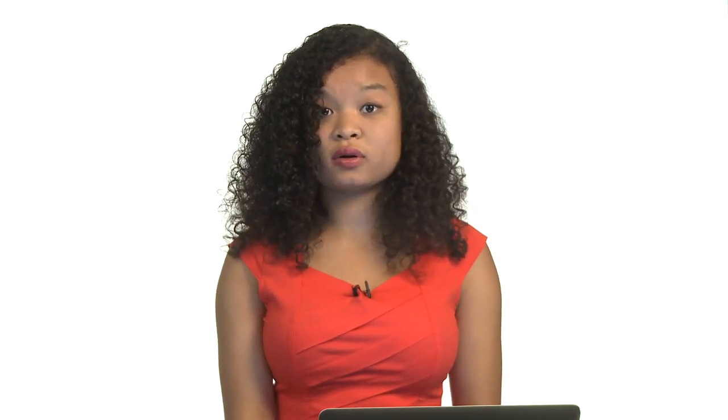To initialize your board, you can use loop structures to contain the starting state of the board, where board i, j represents the element at row i and column j. They start in descending order, and remember that if the number of tiles is odd, then you're going to have to swap the location of 2 and of 1. So there we have our initialized board.